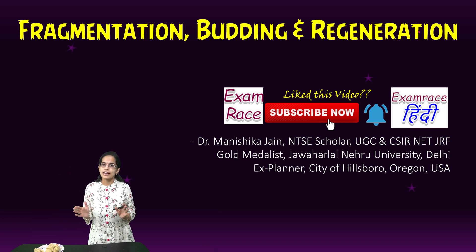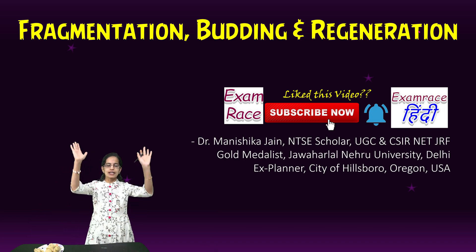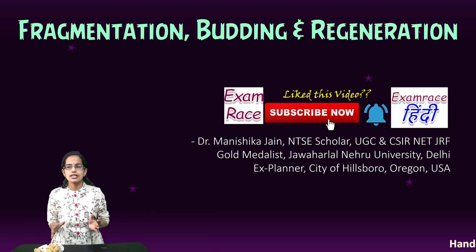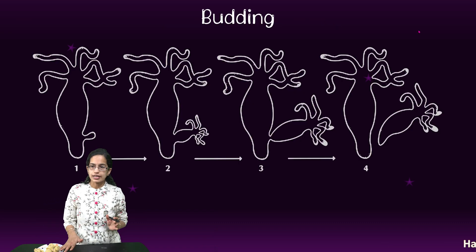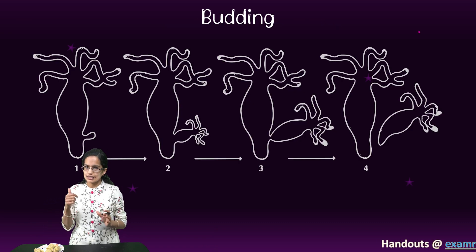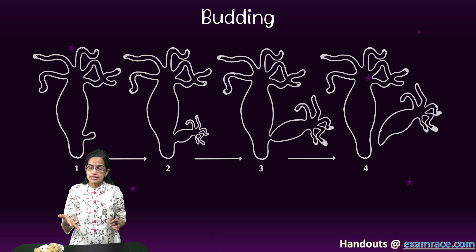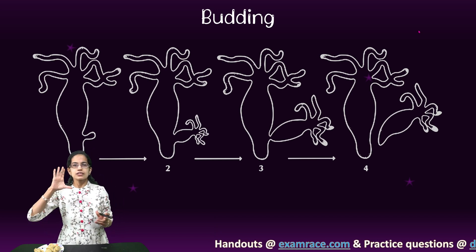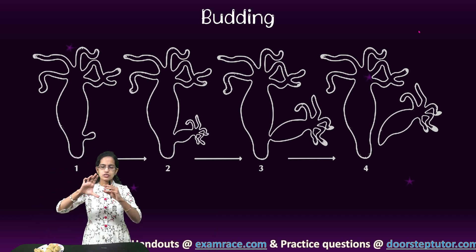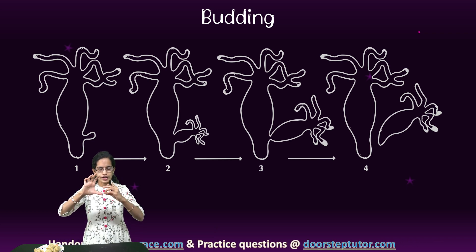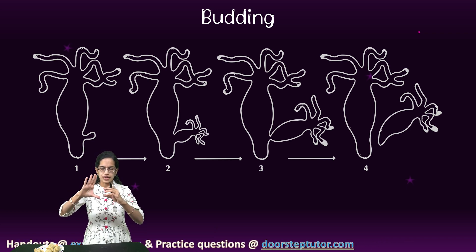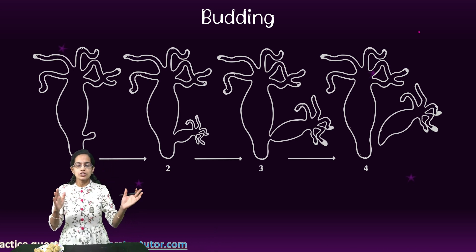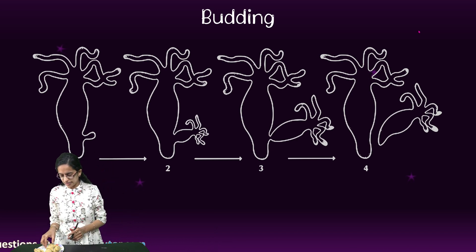Today we will understand the processes of fragmentation, budding, and regeneration. The first process is budding, which is commonly seen in hydra and yeast. In budding, a new organism develops at a specific location on the parent organism and then detaches to form a new independent organism.